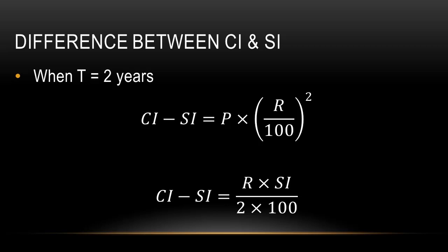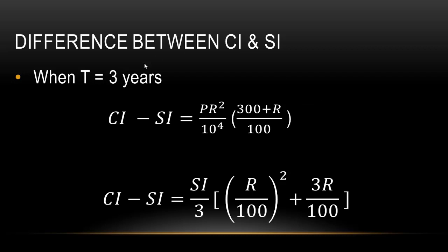The next trick is when the time period is 3 years. The first formula is CI − SI = P × r² / (10⁴) × (300 + r) / 100. The second formula is CI − SI = SI/3 × [(r/100)² + 3 × (r/100)]. The first formula is used when given the principal and rate of interest to find CI − SI, and the second is used when given SI and the difference to find the rate of interest.